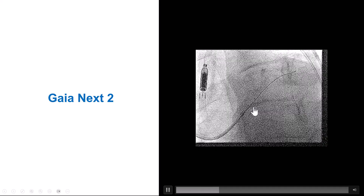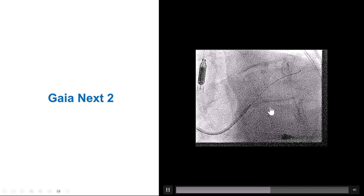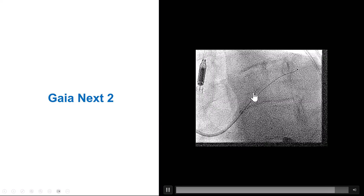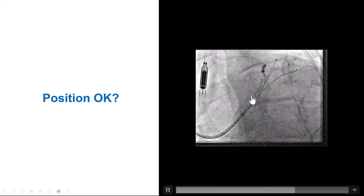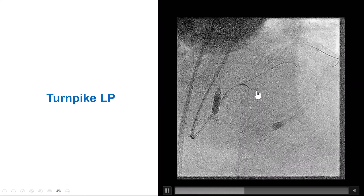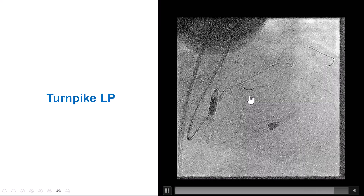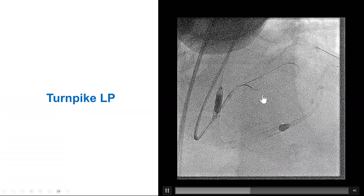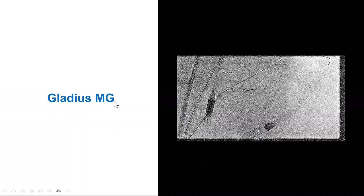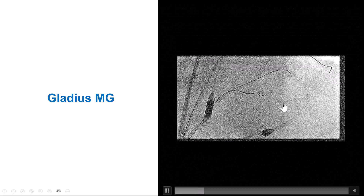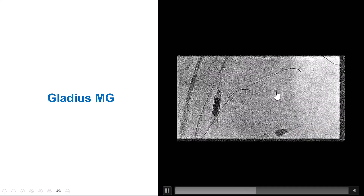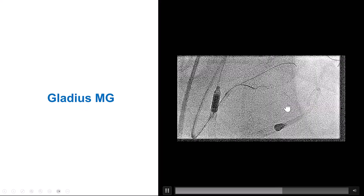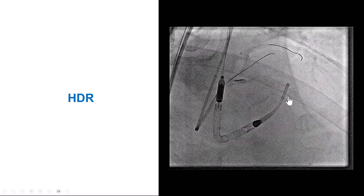Through the Supercross 120, we tried initially with the Gladius Mongo without success. We then tried with a stiffer wire — the Gaia Next 2 — and after a few attempts, the wire seemed to deviate from the course of the circumflex and track along the course of the LAD. We then switched the Supercross for a Turnpike LP microcatheter and tried to knuckle a guide wire with the Mongo, but had significant difficulty. The wire was just buckling and did not want to advance further along the course of the calcium representing the LAD.